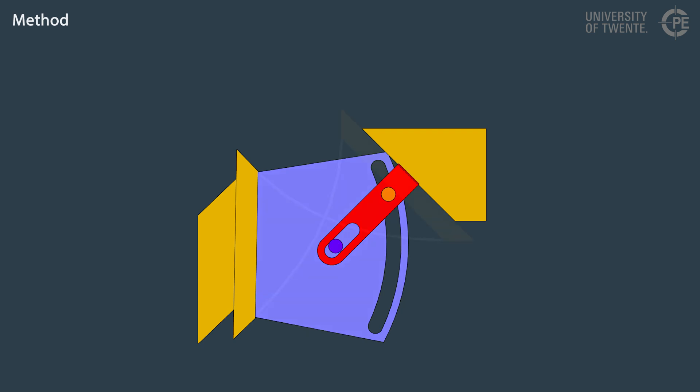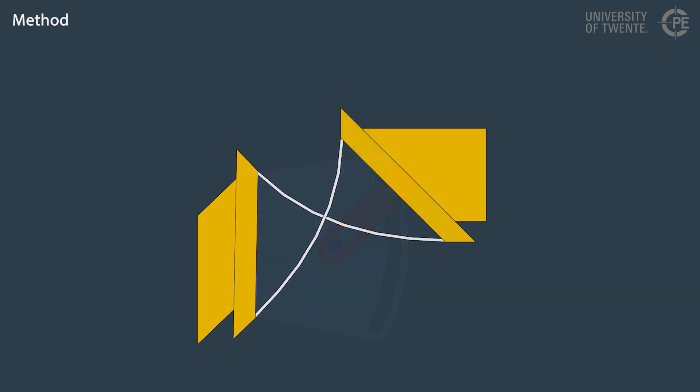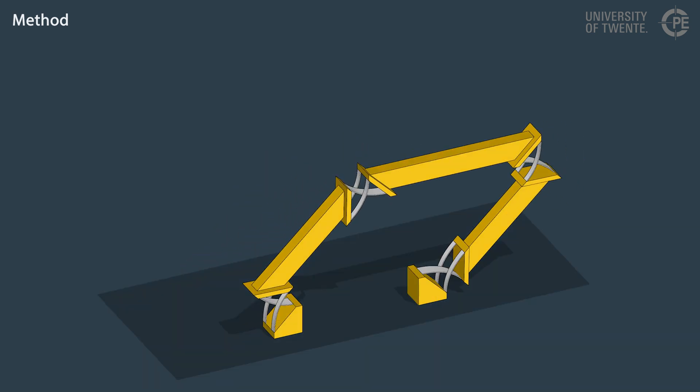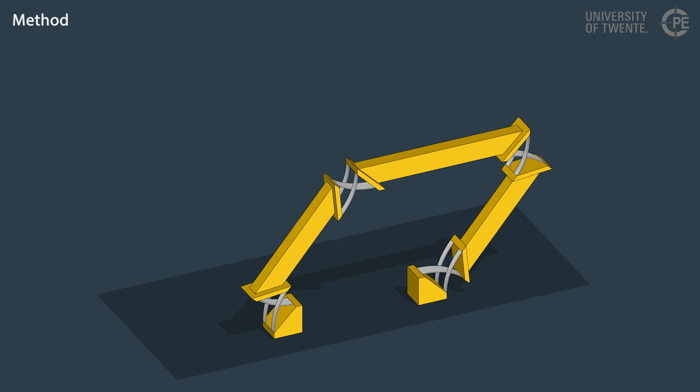This angle can be used to obtain the configuration of the flexures inside the joint. These steps give an approximation of the configuration. The accuracy can optionally be improved by various extra steps, ranging in accuracy and efficiency.